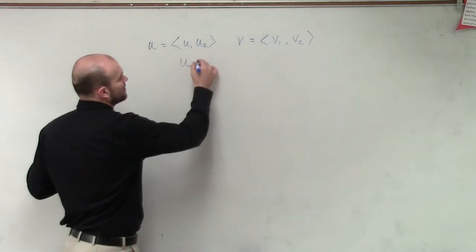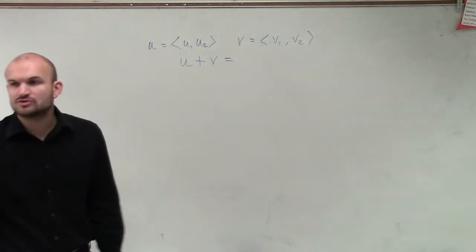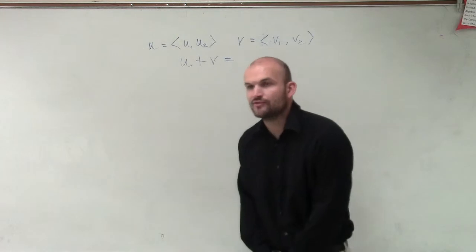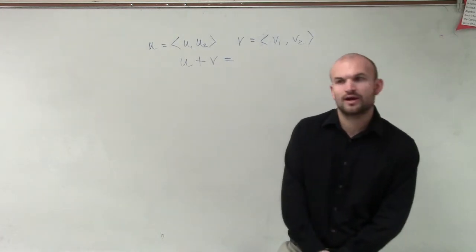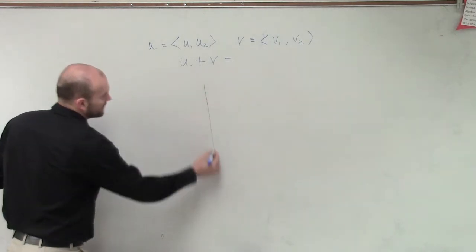Well, let's say I wanted to ask, what about u plus v? What is that going to look like? How can we represent that? Let's take a look at what our resulting vector would actually look like. So let's pretend we have a graph here.